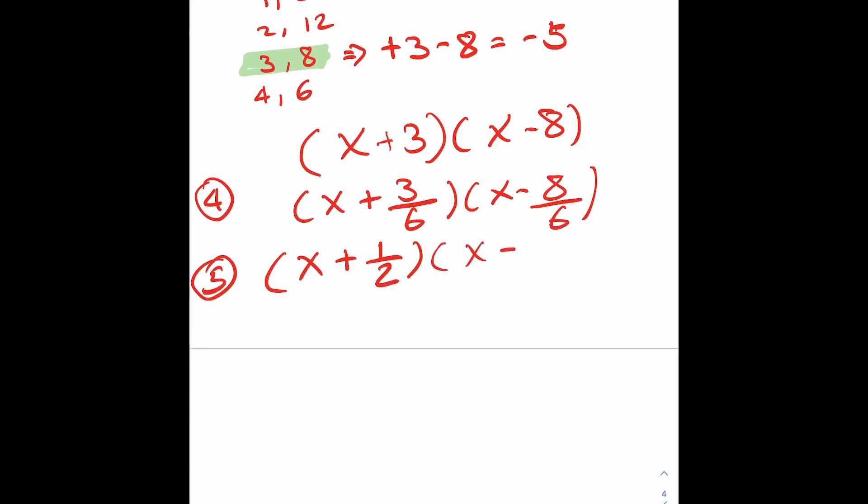So 3 over 6 is a half. 8 over 6 can be simplified to 4 over 3 by dividing top and bottom by 2. And then the last step, any fractions will slide back. So the 2 goes in front, 2x add 1, 3 goes in front, 3x minus 4. And that's me finished.